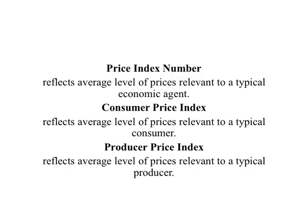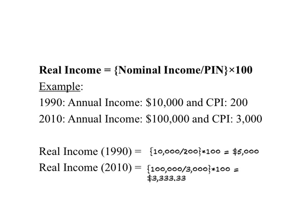There are two popular price index numbers. One is the Consumer Price Index, or CPI, which reflects the average level of prices relevant to a typical consumer. Another is the Producer Price Index, or PPI, which reflects the average level of prices relevant to a typical producer. We use the following formula to calculate real income in a real-world setting: Real Income = (Nominal Income ÷ Relevant Price Index Number) × 100.